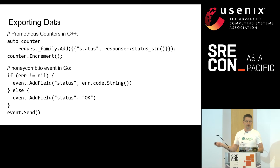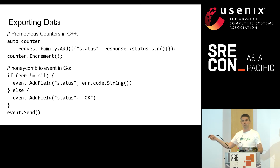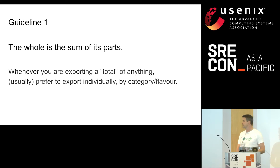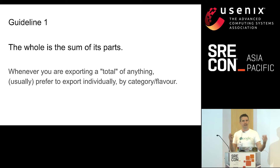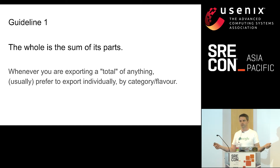Instrumenting this is not harder. In Prometheus, you just have a map where you say the status was this — count that kind of request, not just the requests. In Honeycomb, you just say this event had this status. Still easy, really easy instrumentation, but much higher fidelity data. This brings us to Guideline one: the whole is the sum of its parts. Whenever you're tempted to export a total, don't — export all of the fractions by category or by flavor, and then the total is implicit in the sum of those. It also means you never accidentally increment the error counter then collect your data and have a 200% error rate.